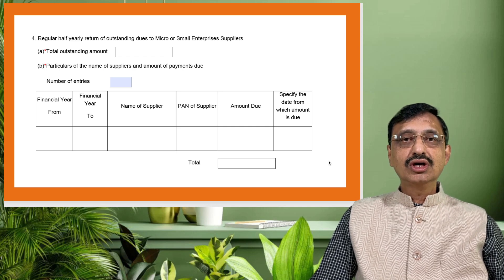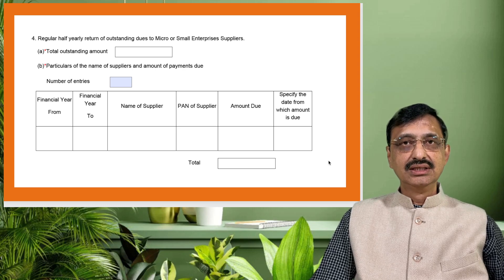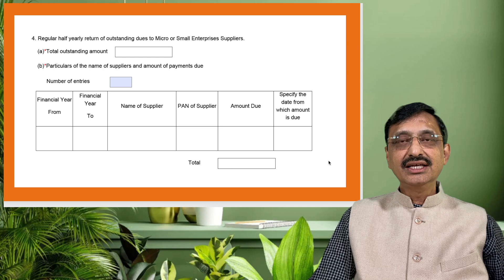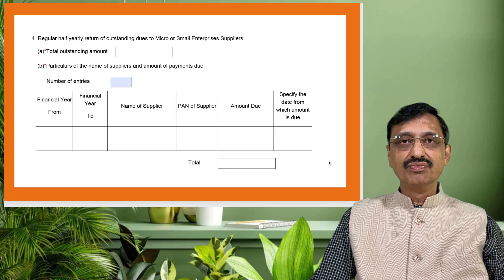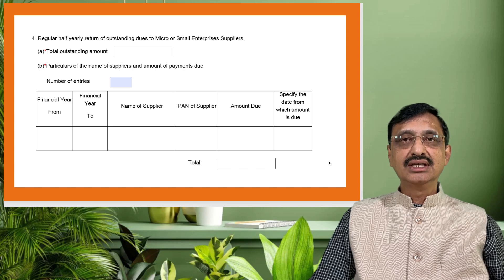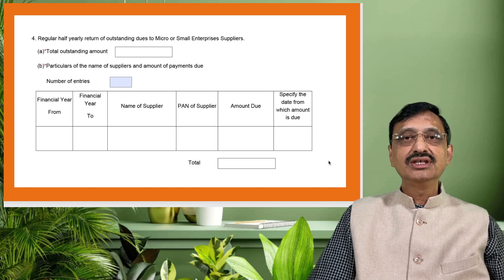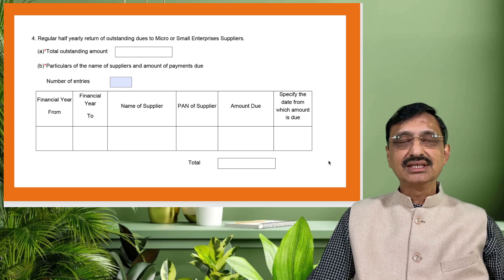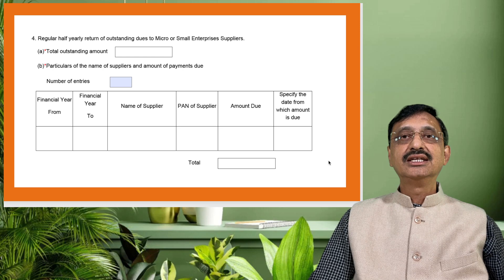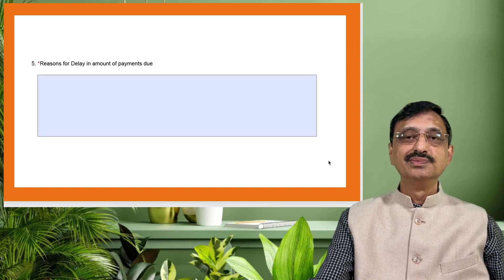In point number four of the return, you have to mention the outstanding dues to the micro or small enterprise suppliers. Here you have to mention the total outstanding amount and also the number of entries you are going to populate in the form — that is, to how many suppliers a late payment has been made. Once you give the number of entities, that many columns get generated in the form. You have to give the financial year, the name of the supplier, the PAN of the supplier, the amount due, and the date from which the amount is due.